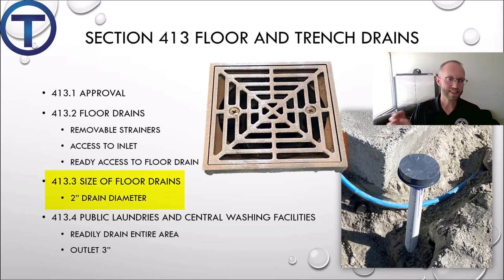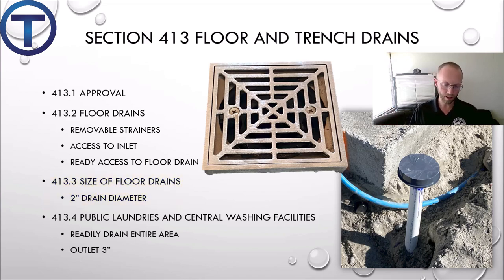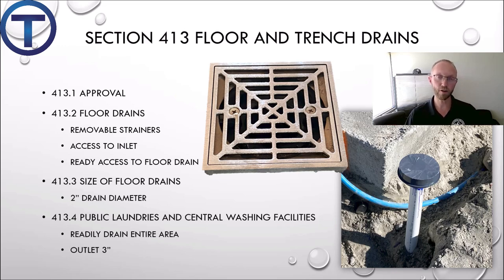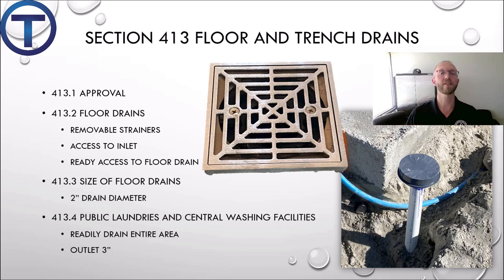4.13.3 covers the size of floor drains — a minimum of two-inch diameter is required. 4.13.4 states that for public laundries and central washing facilities in multi-family dwellings, clothes washers shall be provided with floor drains located to readily drain the entire floor area. Such drains shall have an outlet of not less than three inches in diameter. So two inch on a normal floor drain, three inch on a laundry floor drain.